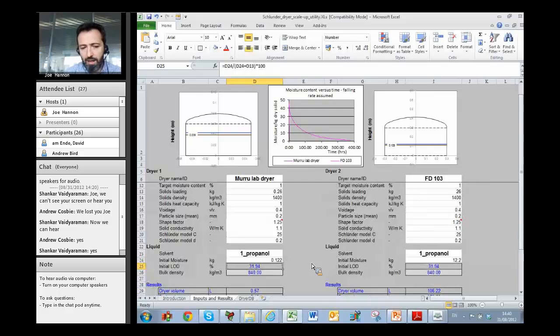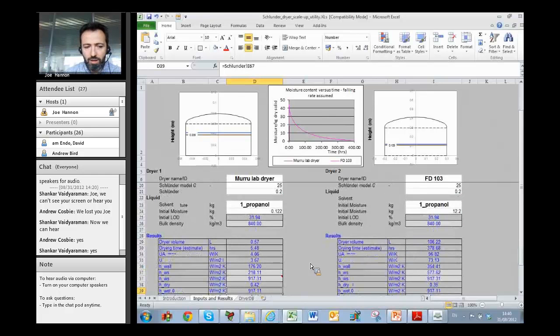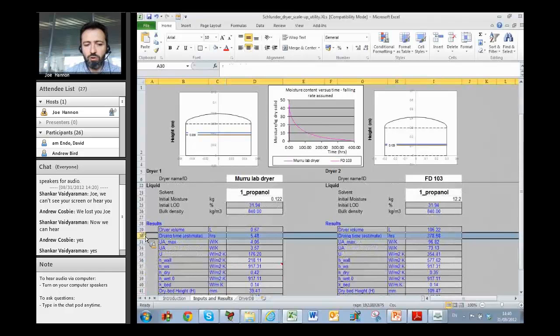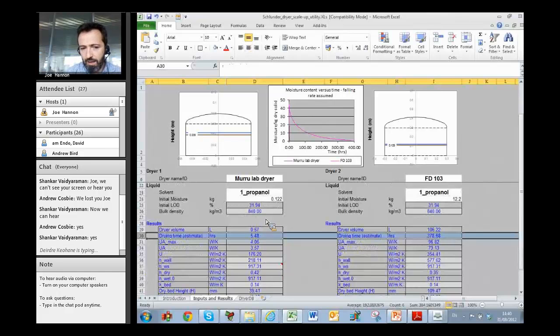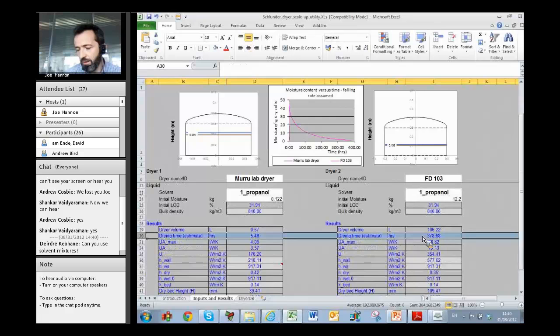And from those inputs then, it calculates some initial useful outputs. Things like the bulk density of your bed. Easy stuff like the initial LOD. But then ultimately it also makes an estimate of your drying time. So you can see here that I'm getting about five and a half hours for a particular case in the Muru paper with 1-propanol as the solvent in unagitated conditions. And on the right hand side, in a bigger dryer, I'm getting hundreds of hours under unagitated conditions.